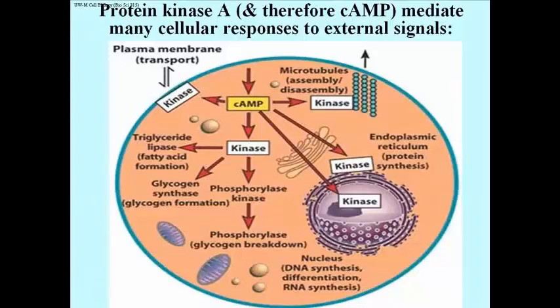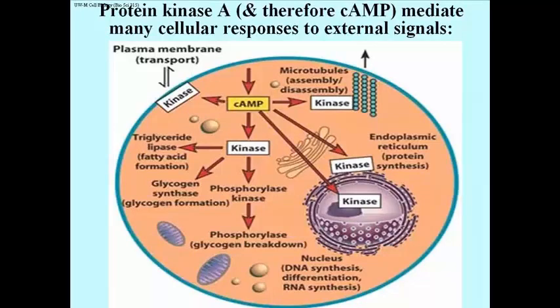This slide summarizes many of the cyclic AMP and therefore protein kinase A-mediated cell responses, including changing plasma membrane permeability to specific molecules, remodeling the cytoskeleton to change cell shape, activating transcription factors in the nucleus to regulate gene expression, and even regulating protein synthesis on the rough endoplasmic reticulum.